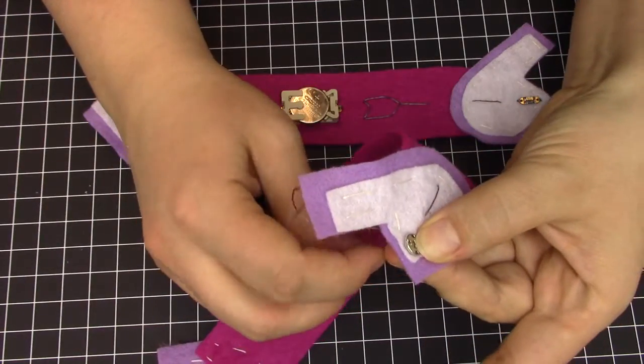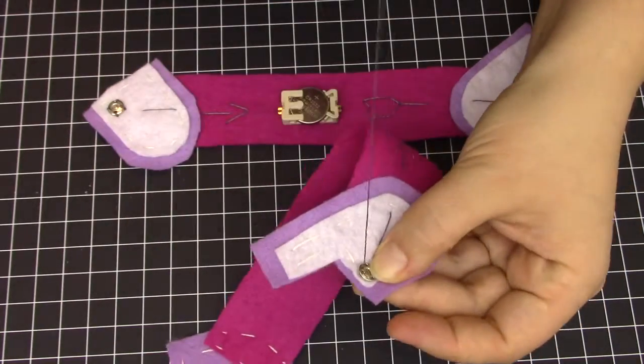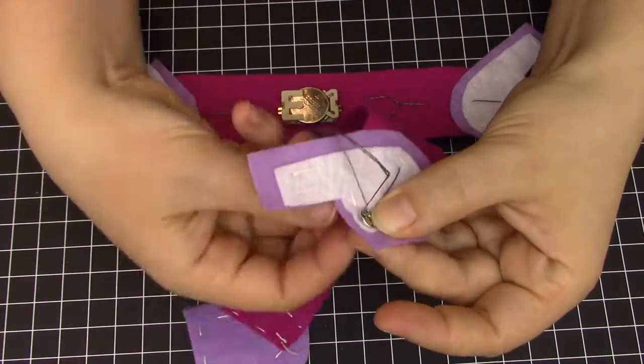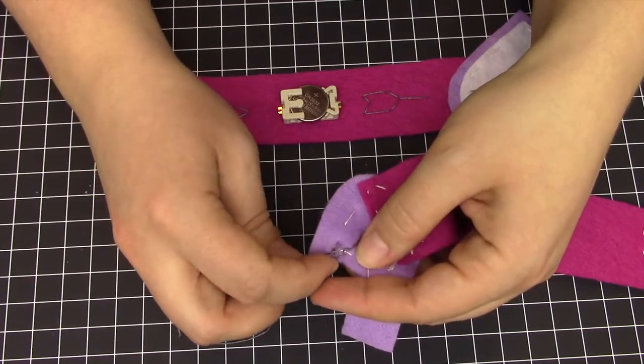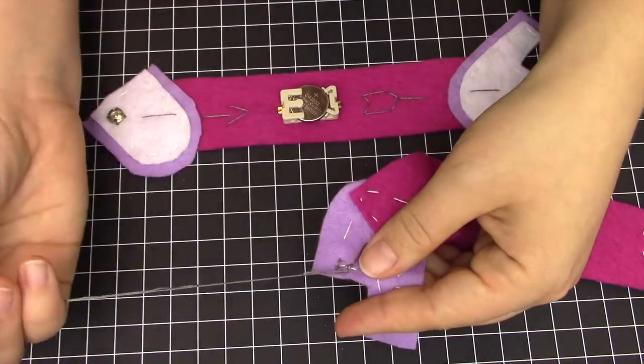Next, take the remainder of your conductive thread, and attach the snap securely, going through all of the holes. Tie a knot in the conductive thread, just as you did with the non-conductive thread.